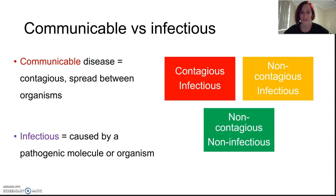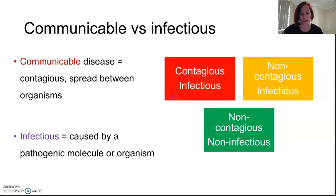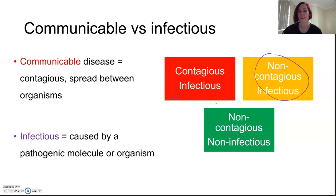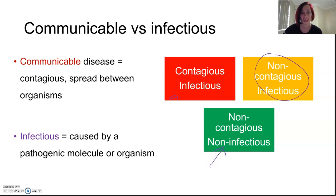For diseases that are both contagious and infectious — colds, STIs, pneumonia, hepatitis, Ebola — they transfer between organisms and are caused by a pathogenic organism. For non-contagious but infectious diseases, something is still caused by a pathogen like bacteria or a virus, but you're not going to catch it from one another — for example, tetanus, which you might get from the environment. Non-infectious and non-contagious includes genetic disorders and nutritional deficiencies.